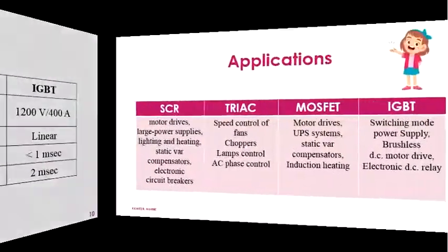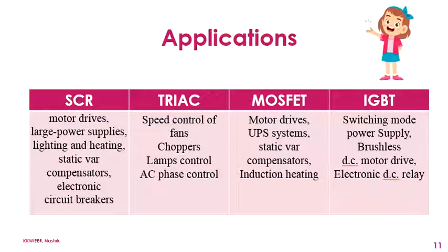The last point covers the applications of these four semiconductor devices. SCR is used in motor drives, large power supplies, lighting and heating, static VAR compensators, and electronic circuit breakers. TRIAC is used in speed control of fans, choppers, lamp control, and AC phase control. Power MOSFETs are used in motor drives, UPS systems, static VAR compensators, and induction heating. IGBT is used in switching mode power supplies, brushless DC motor drives, and electronic DC relays.